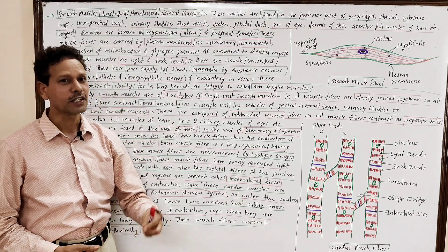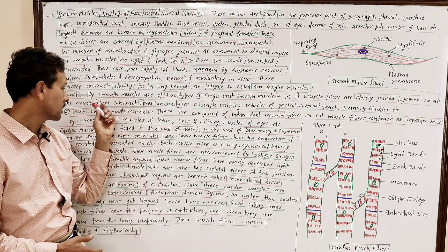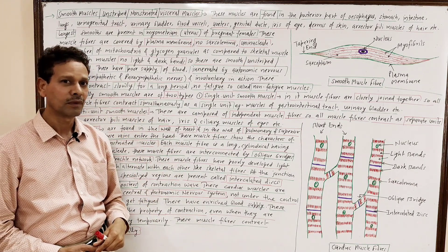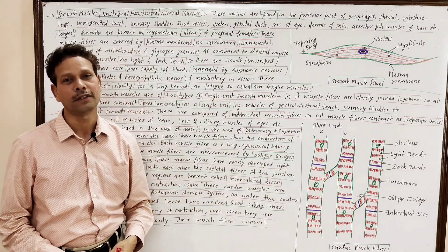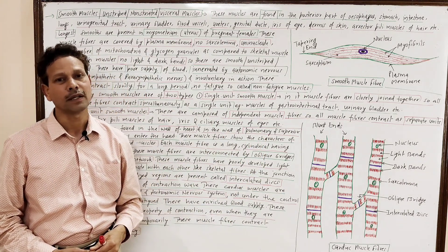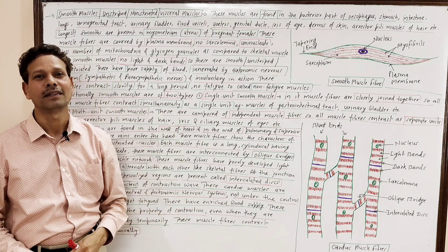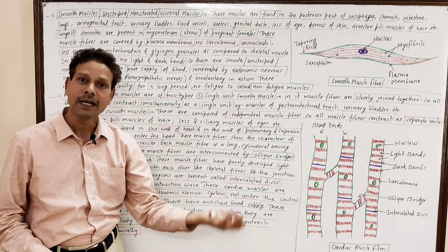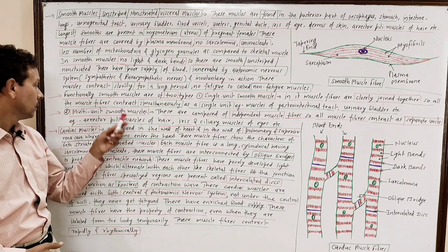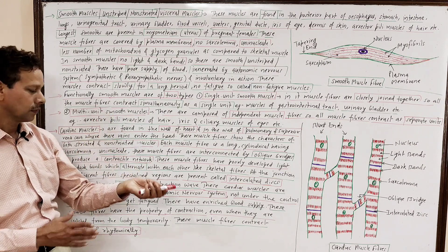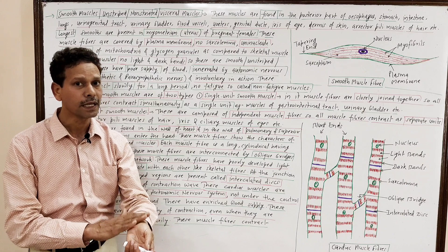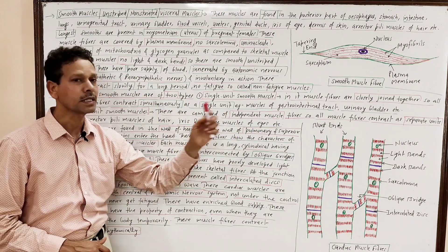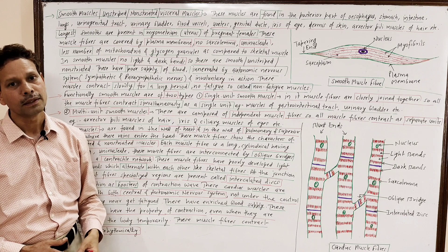The second type is multi-unit smooth muscles. In multi-unit smooth muscles, the muscle fibers remain independent and are not linked with each other, so they work independently — meaning different muscle fibers function at different times. Such multi-unit smooth muscles are commonly found in the arrector pili muscles of skin hair, the iris muscles of the human eye, and the ciliary muscles of our eyes.